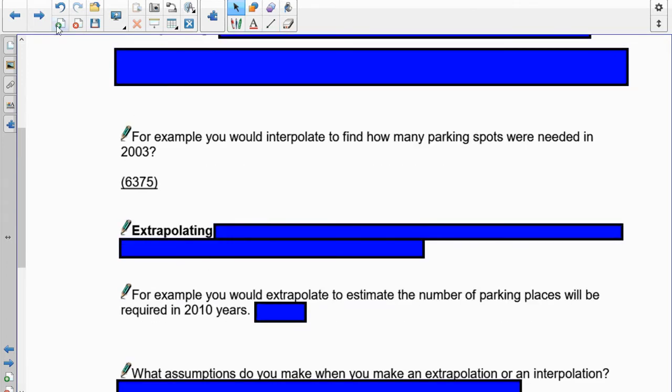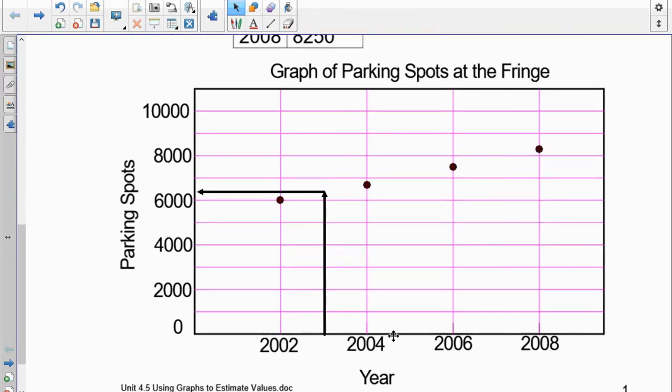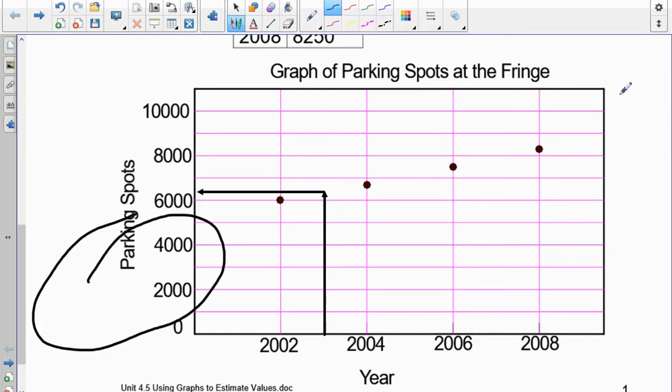Now extrapolating is when you go beyond the graph that's there. So for example, this one here is limited. We only go to 2008, right? And we only start at 2002. So extrapolating is when you go outside this graph and you grab information from down here or off the graph there. That's extrapolating, which means it's external. External is extrapolating.